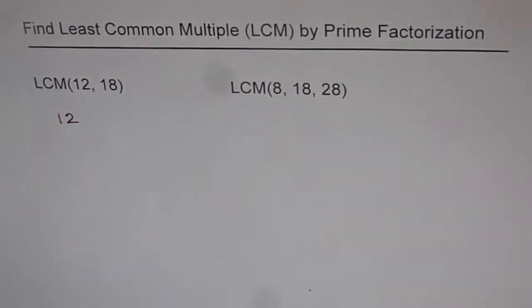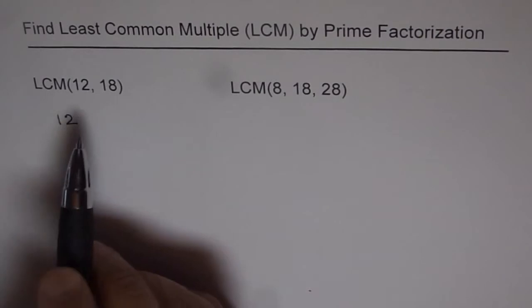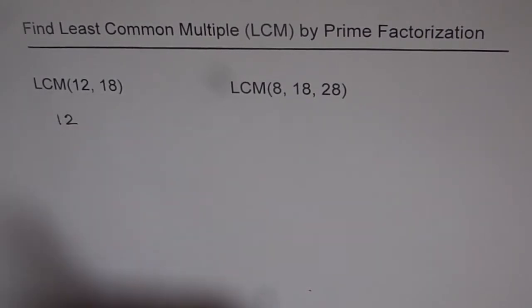So, first process is, write down unique prime factors. The process followed here is, given these two numbers, 12 and 18, we should... Now, we will do factor tree for the number 12.